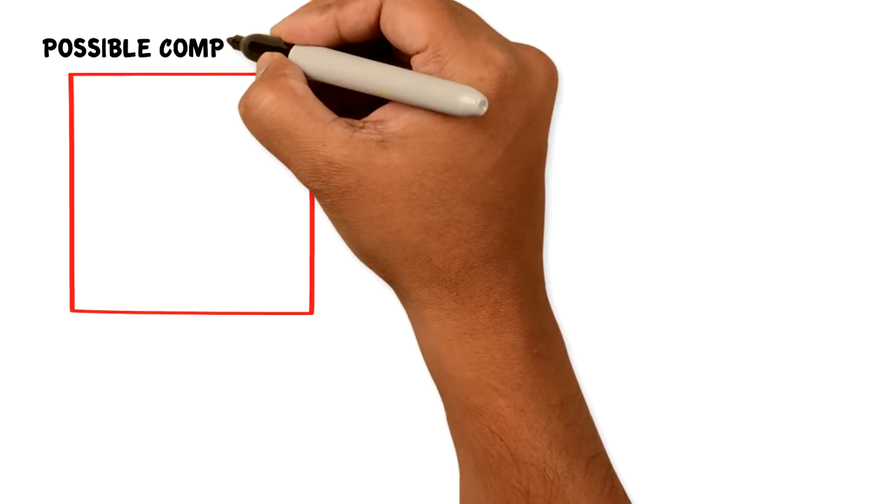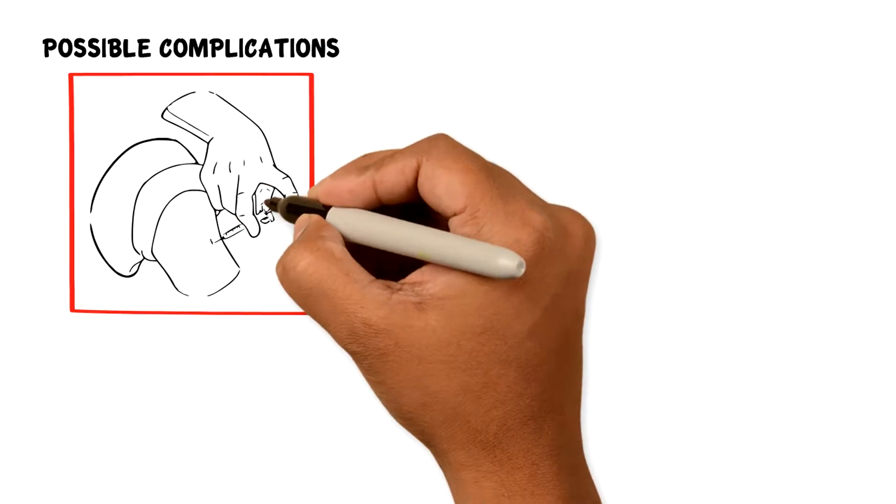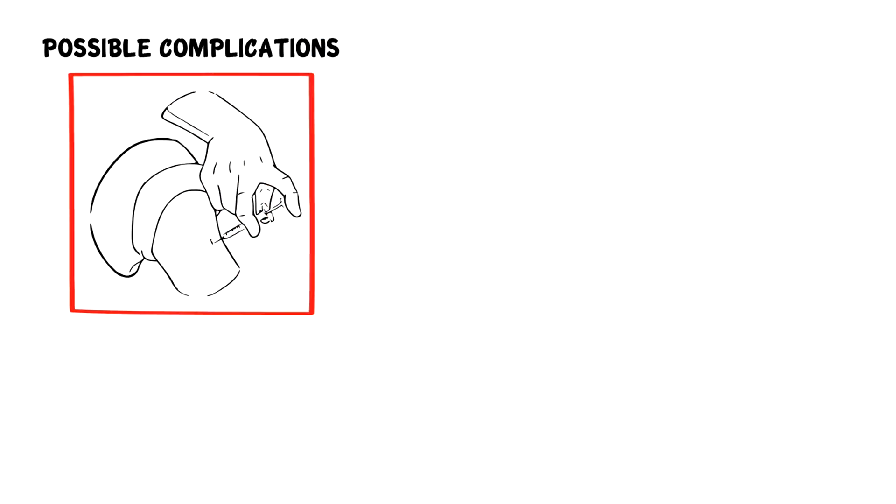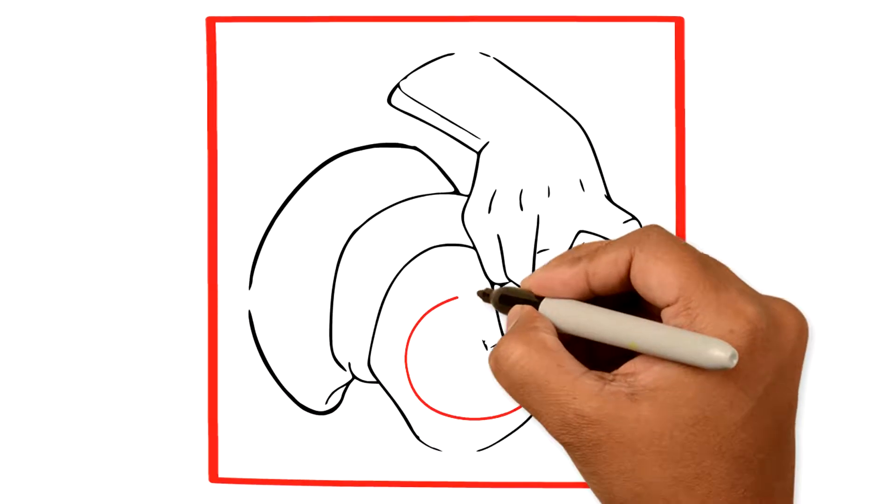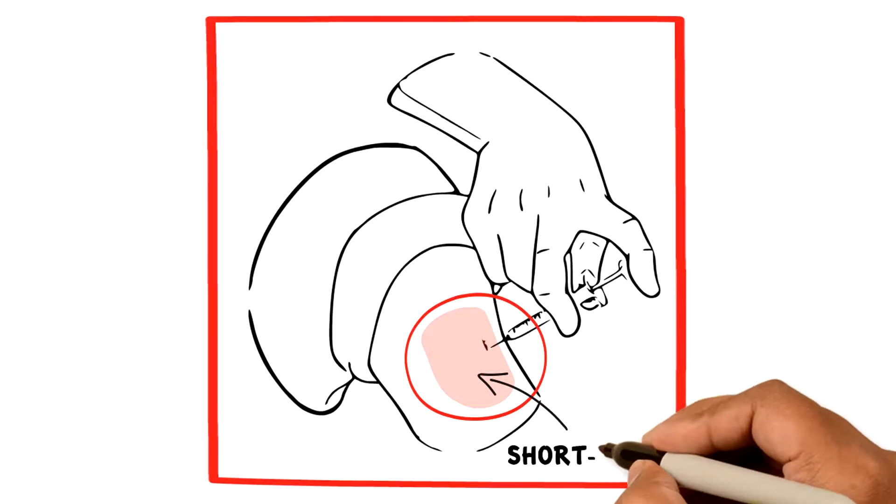There are a number of possible complications which may occur when a joint injection is performed, such as pain and discomfort or bruising which may happen at the injection site. This is usually short-lived.